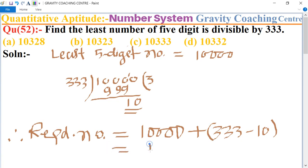Equal to 10,000 plus 323, equal to 10,323, which is the required answer. So option B is the correct answer.